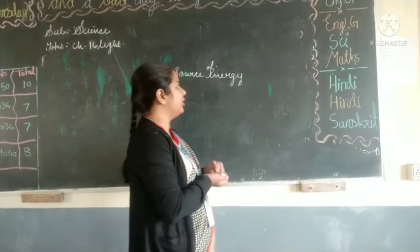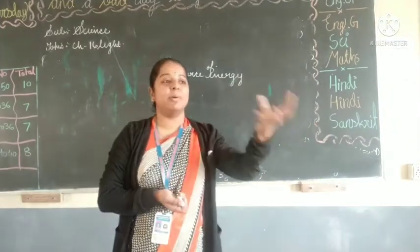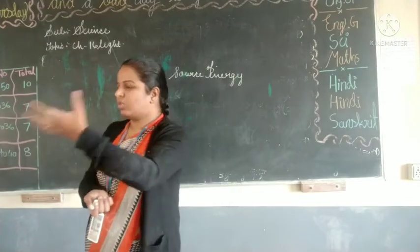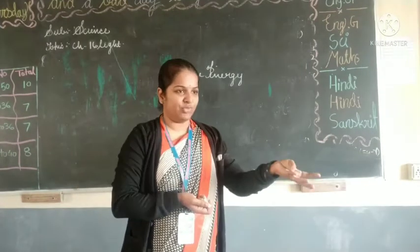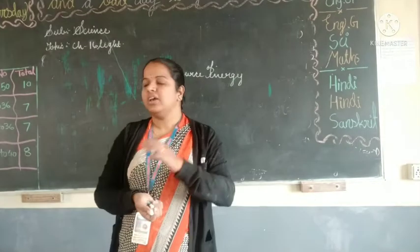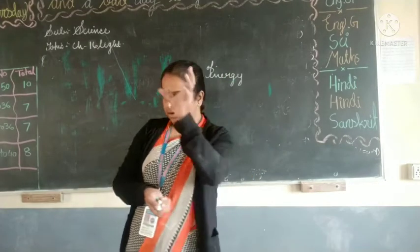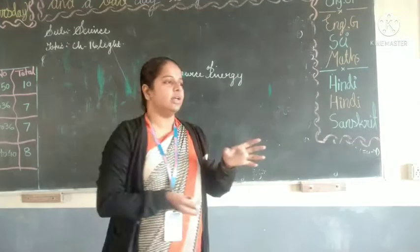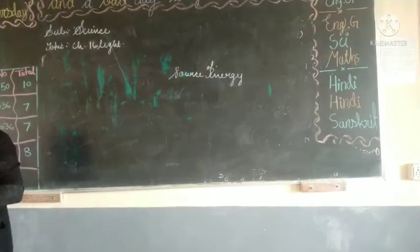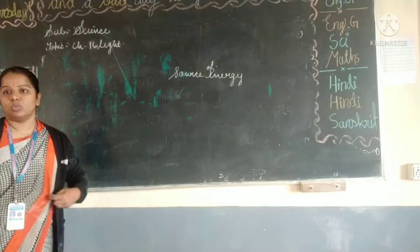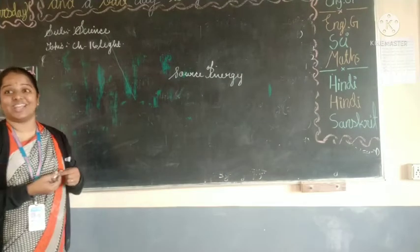In today's chapter we are going to see: what is light, how light helps us to see objects, and the angle of reflection. Laws of reflection means there are some rules for reflection, and those laws we will see. Then we will see about the uses of white light — how white lights are.